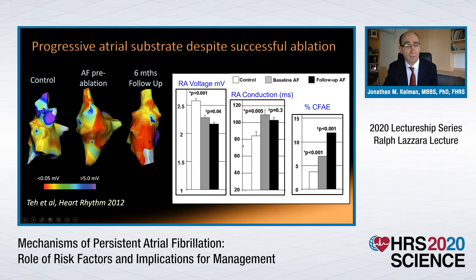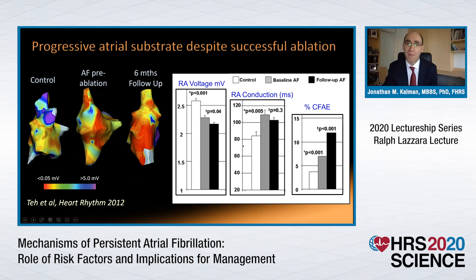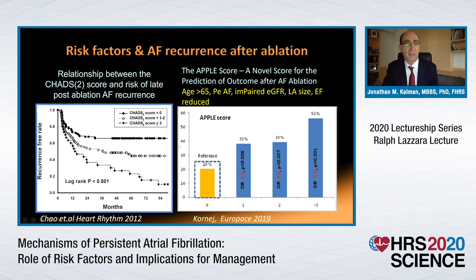We undertook a study in humans looking at outcomes following six months of sinus rhythm after successful ablation. Pre-ablation AF showed lower voltages compared with controls. But to our surprise, when we followed patients after successful ablation six months later, voltage had continued to decline, conduction had not significantly improved, and the percentage of complex signals had actually gradually continued to increase. This emphasises that treatment of the arrhythmia alone may not be enough — those underlying risk factors continue to progress the remodelling process. The more risk factors, the greater the remodelling, and the less likely that success will be maintained long term.